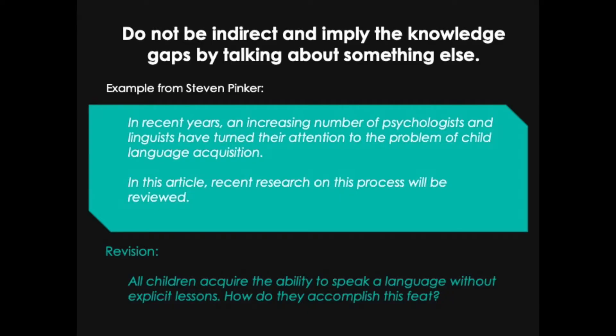One mistake that authors can make that obscures these key elements is to be indirect in their language. Let's look at an example from Steven Pinker. He quotes from a paper: 'In recent years, an increasing number of psychologists and linguists have turned their attention to the problem of child language acquisition. In this article, recent research on this process will be reviewed.' So that first sentence, if we read it literally, it's telling us how psychologists and linguists are spending their attention.